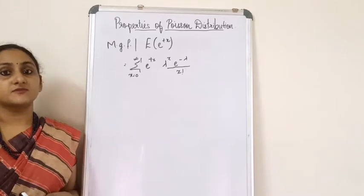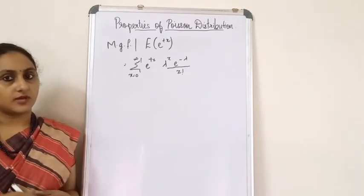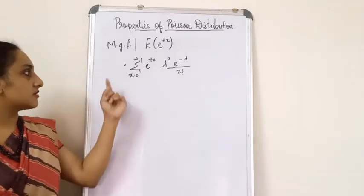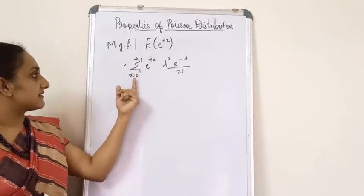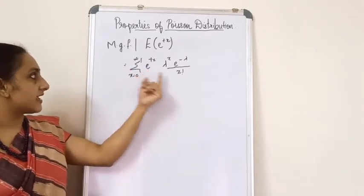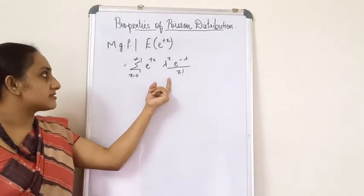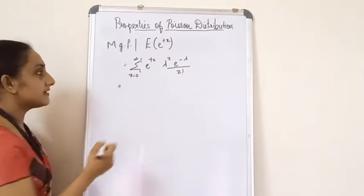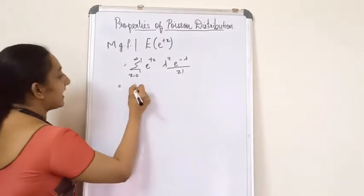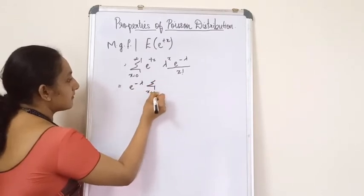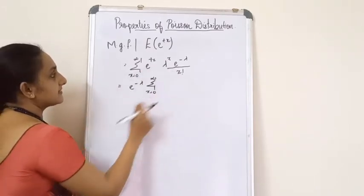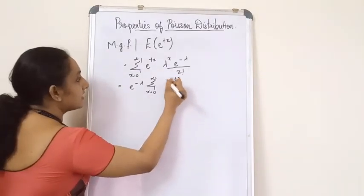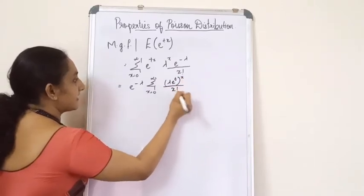Now we find the MGF for Poisson distribution. The MGF is E[e^(tx)] = Σ (x=0 to ∞) e^(tx) · λ^x · e^(−λ) / x!. Taking e^(−λ) outside and combining e^(tx) and λ^x, we get (λe^t)^x / x!.